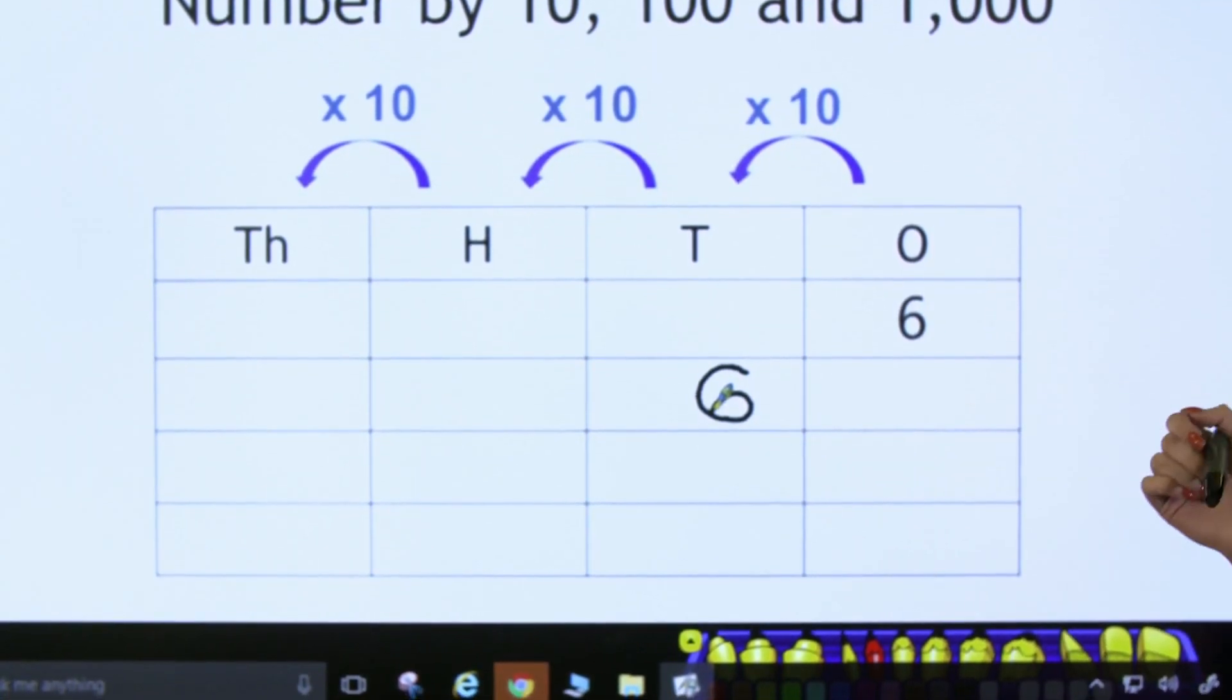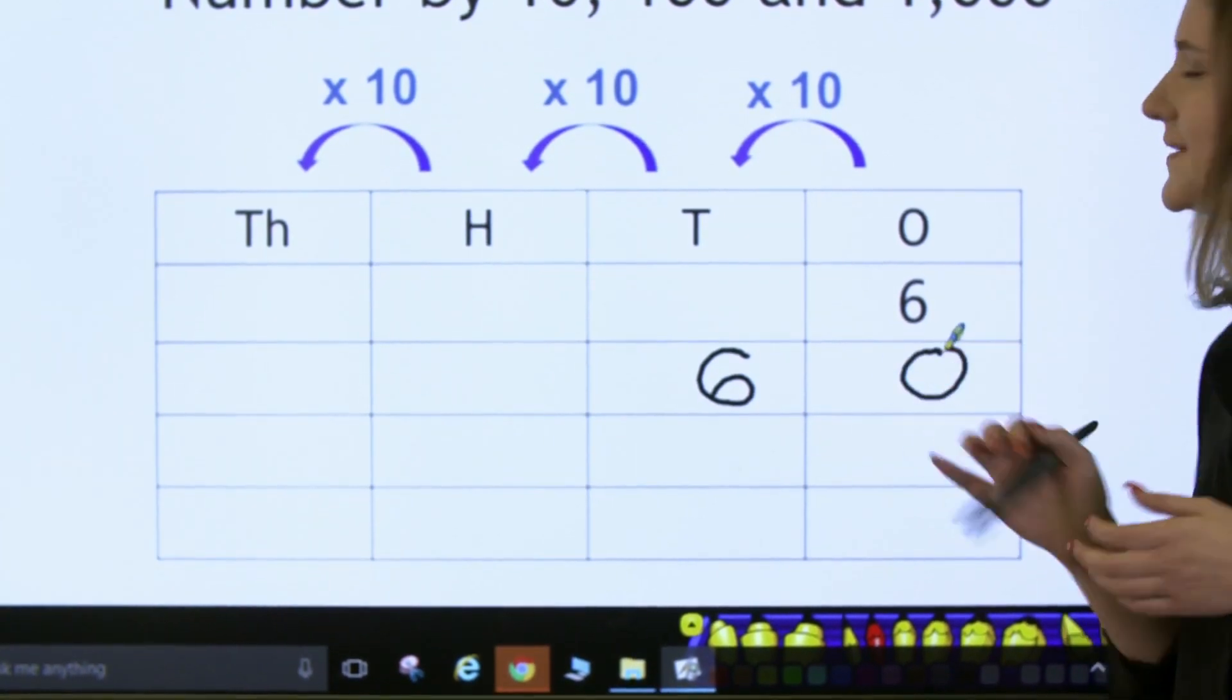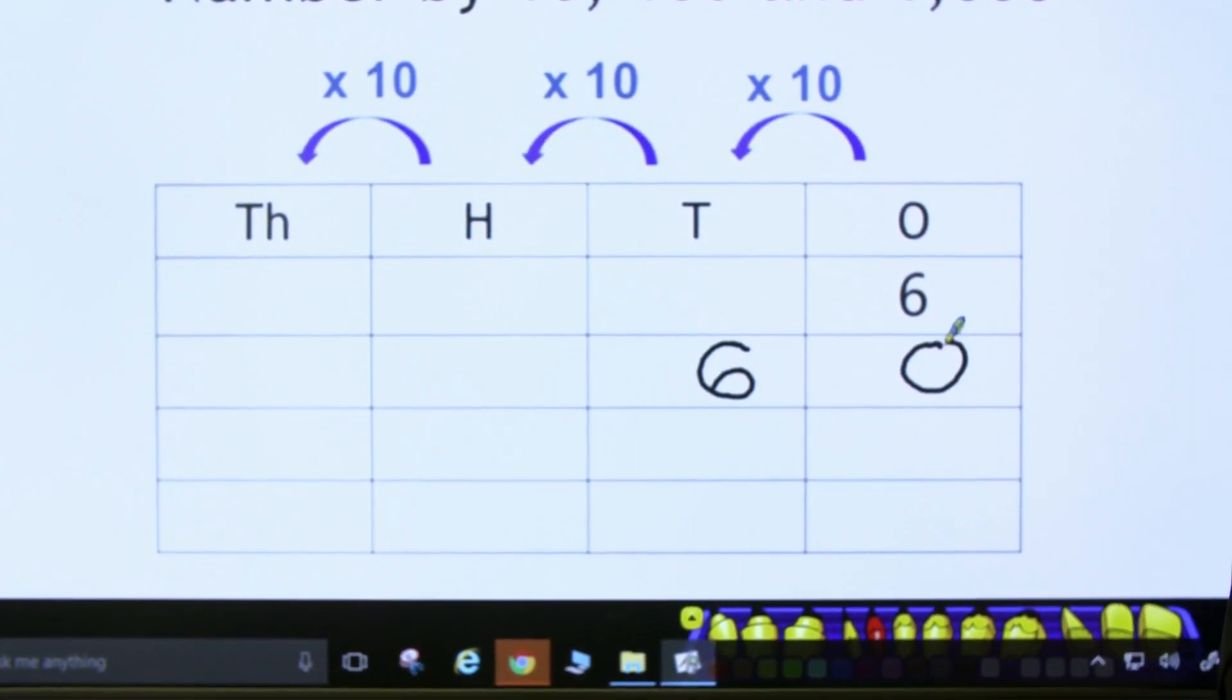We then need to remember to put our place value holder. So, 6 multiplied by 10 is 60.